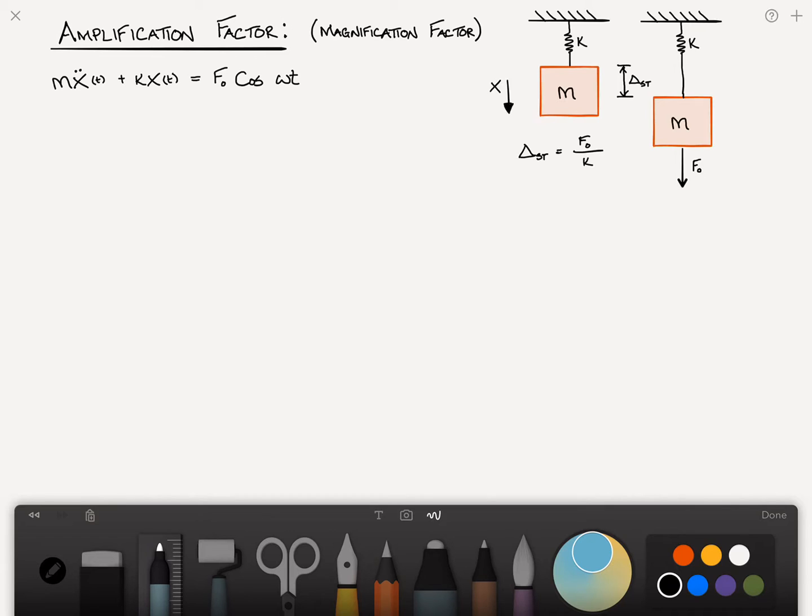And we know from previous videos, there's a link up above if you haven't seen it, that the steady state or particular solution x sub p of t is equal to capital x sub zero, some amplitude, times cosine omega t. And we'll number these equations 1 and 2.